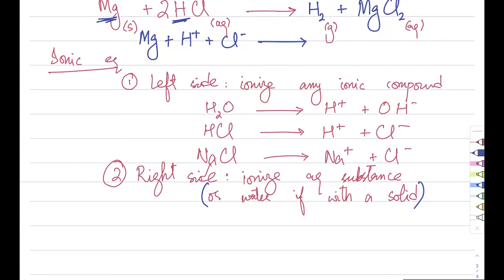On the right side I have hydrogen stays as it is, and for magnesium I will split it because it's aqueous. So magnesium changes to magnesium plus two, and chloride which is going to change to Cl minus. Notice that balancing is not important right now, what's important is writing the correct formula.